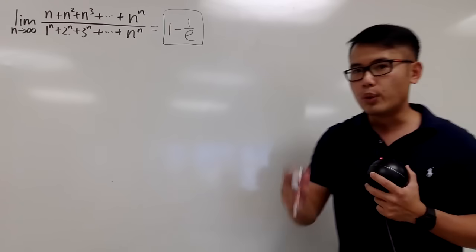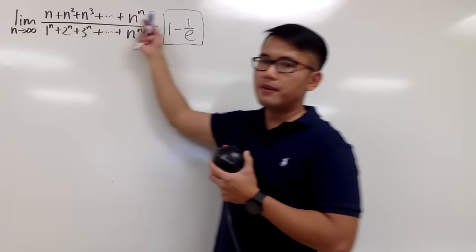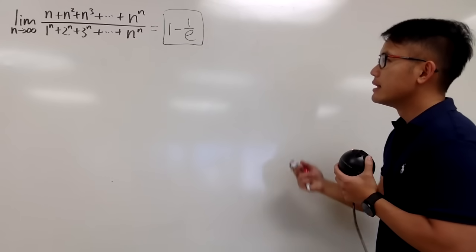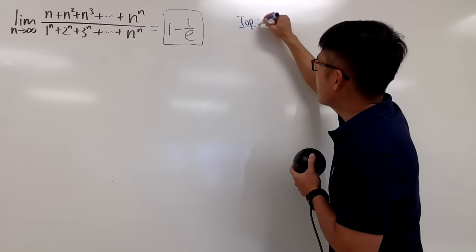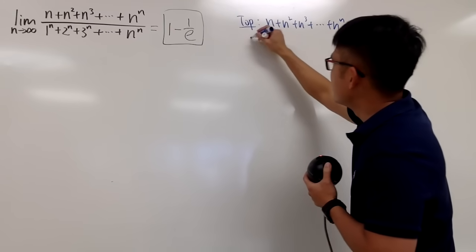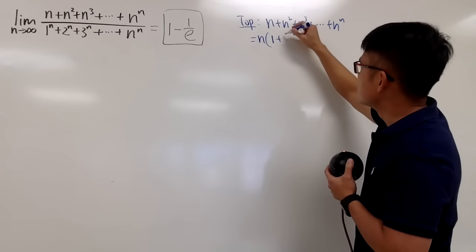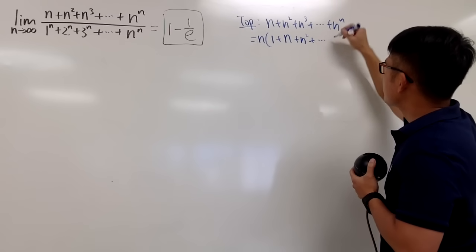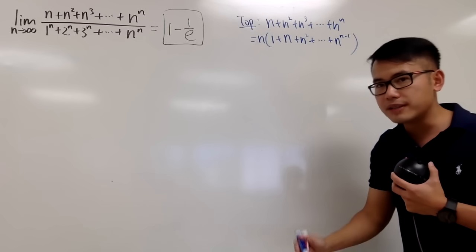Now let me demonstrate the way that I like the most. I'm going to tackle the top first and I will do some factoring. So let me just put this down on the side — this is just the top. Everybody has an n, so let's go ahead and factor out the n. This way we get n times (1 plus n plus n squared plus dot dot dot), and this right here is just n to the n minus 1, because I factor out n to the first power in the front.